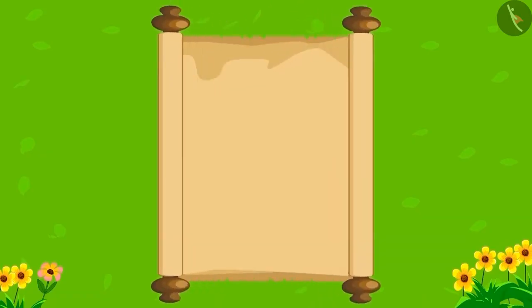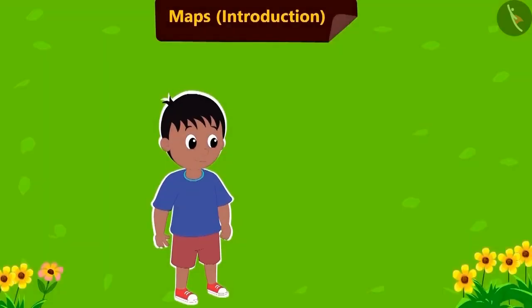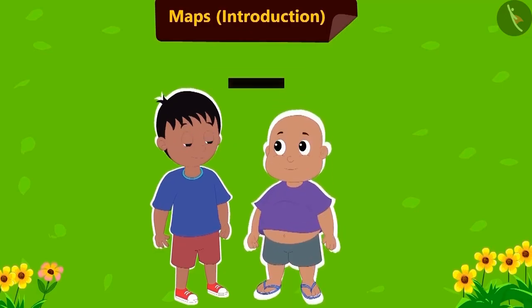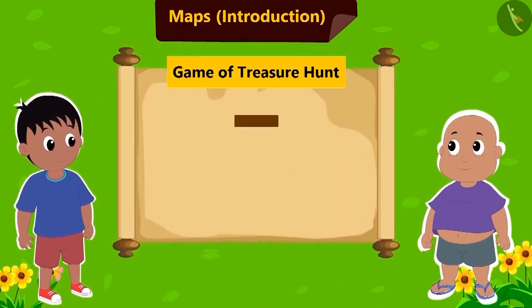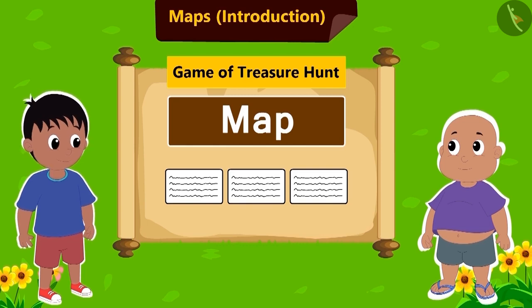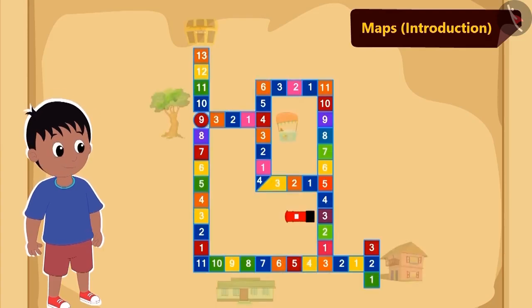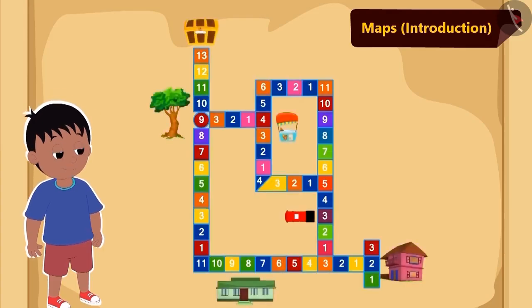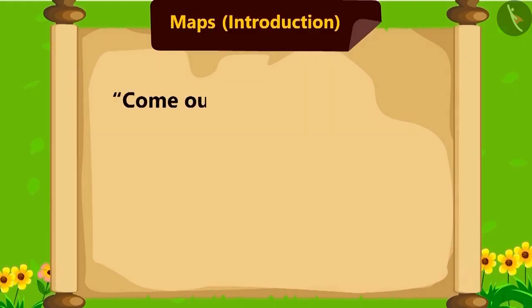Hello children. In this lesson we will learn about maps. Raju and Bablu are playing the game of treasure hunt. Raju has given Bablu a map and a few written instructions. Bablu will have to find the treasure following the given instructions. The map made by Raju looks something like this.